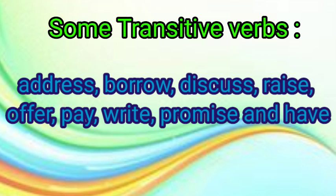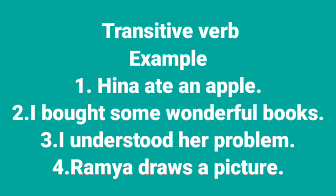Let's see some examples of transitive verbs. First: 'Hina ate an apple.' The verb 'ate' is past tense, so we split it into auxiliary and main verb: 'did' plus 'eat.' Now ask the question: What did Hina eat? Hina ate an apple. This confirms 'ate' is a transitive verb.